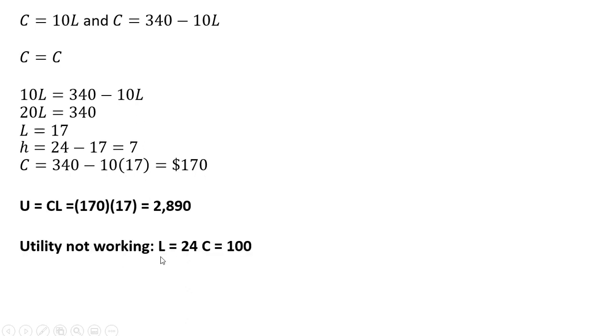Now notice if the person didn't work, they would be at their endowment point, which is 24 hours of leisure, and their consumption would just equal their non-labor income of $100. So utility at the endowment point here would be $2,400. So the person does get more utility by working than not working.